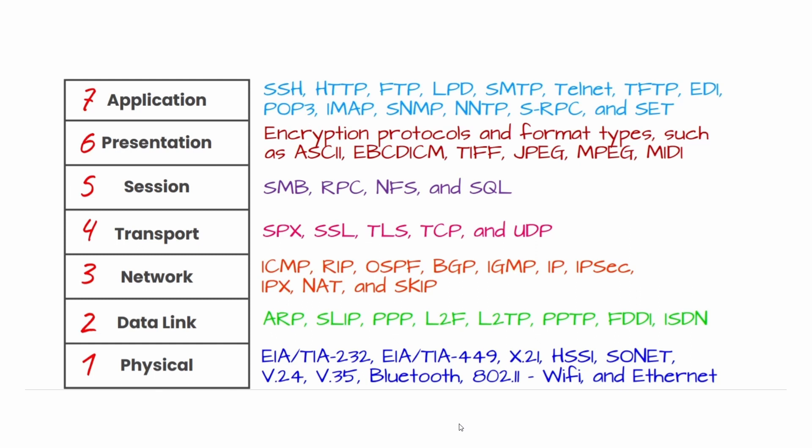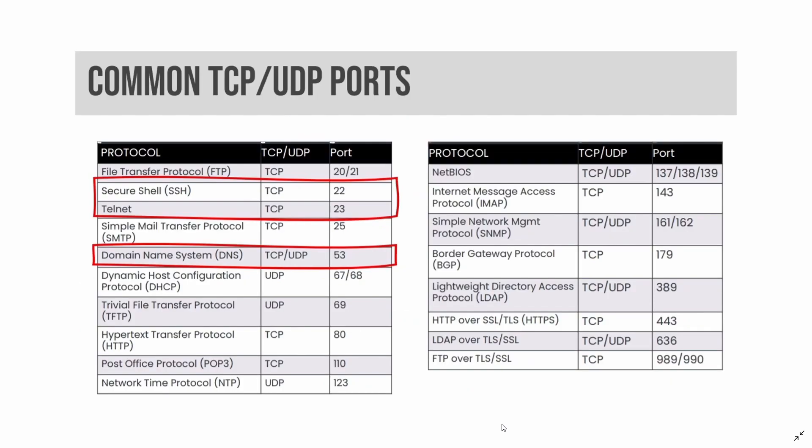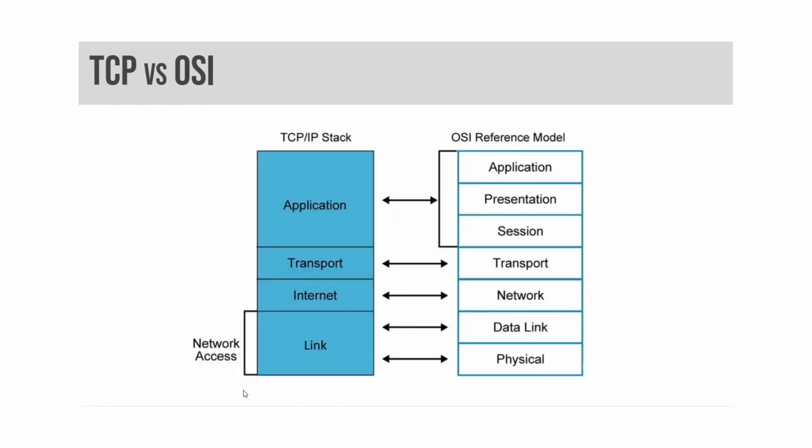Active FTP uses a data connection where data is transferred that originates from TCP port 20. DNS is the domain name system, a distributed global database that translates names to IP addresses and vice versa. DNS uses both TCP and UDP. Small responses use UDP port 53, while large responses, including zone transfers, use TCP port 53.